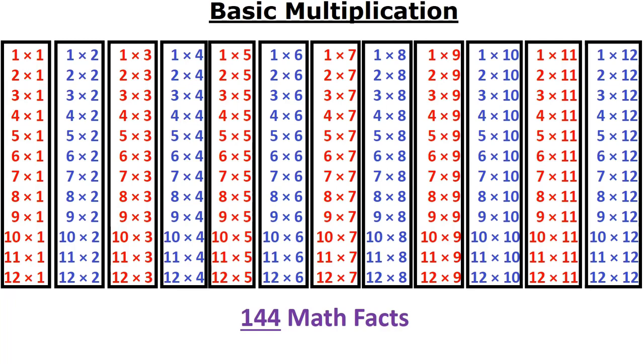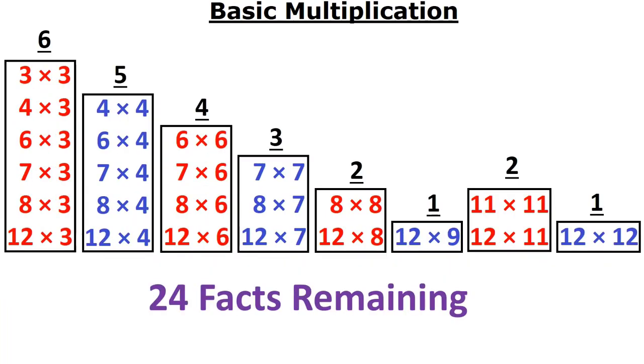That's right, from just 6 rules, we go from 144 math facts down to 24. How is that possible? Well, let's take a look.